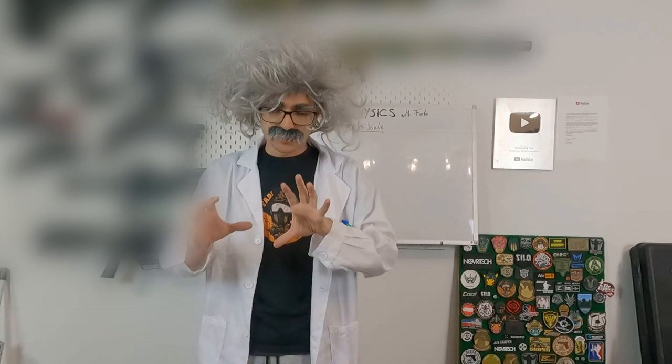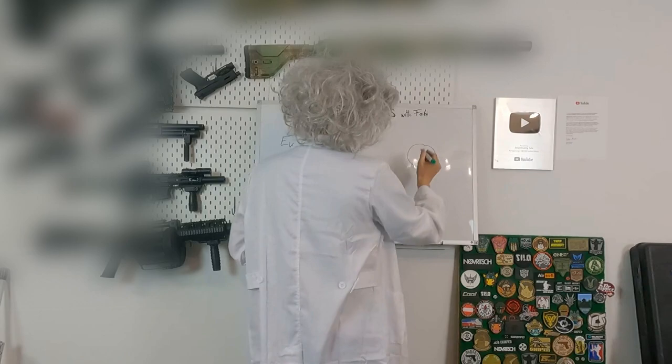You guys might have seen on some airsoft shop that some guns are advertised with Joules or FPS, and today we're talking about the difference between these. To start out with, I want to talk about Joules. Joules are the unit for kinetic energy. Kinetic energy is basically the energy you need to give to an object to reach a certain velocity. So if you want to go 30 miles per hour with your car, you need to put energy into it to accelerate so it can reach 30 miles per hour.